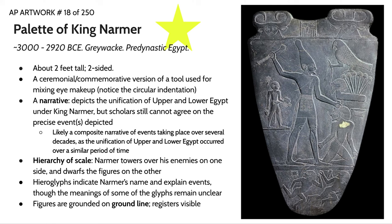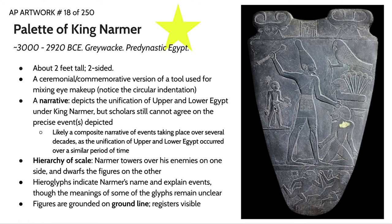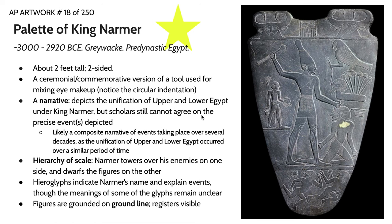Before Egypt was unified under dynastic rule, it was separated into Upper Egypt and Lower Egypt. This unification effort was facilitated over several decades, particularly by King Narmer. These are events happening over a long period of time, but in this narrative things appear to happen simultaneously. We have this hierarchy of scale — the largest figures are typically the most important. There are also hieroglyphs on this piece; we know the symbol of a catfish and a chisel means 'Narmer.' There are also registers — narrative bands serving as ground lines for figures to stand on — one for Narmer and the enemy, another for his sandal bearer.